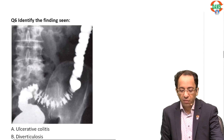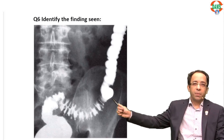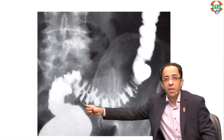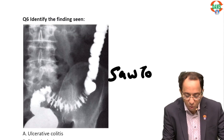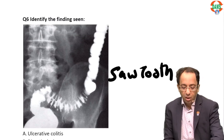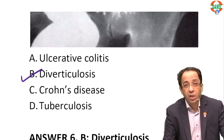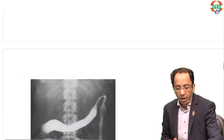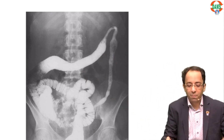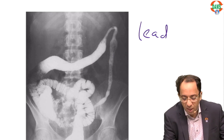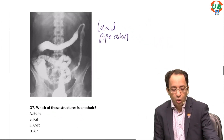Look at this barium enema — in the sigmoid colon you can see a very important appearance called the saw-tooth appearance. Saw-tooth appearance in the sigmoid colon is seen in diverticulosis. In contrast, in ulcerative colitis, the entire colon becomes fibrosed and looks like a lead pipe — so remember: lead pipe colon is seen in ulcerative colitis, and saw-tooth appearance is seen in diverticulosis.